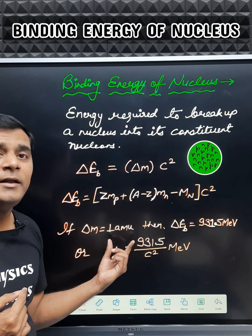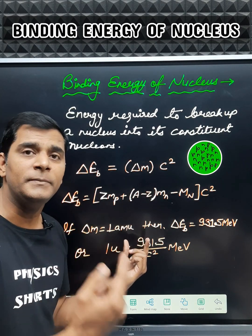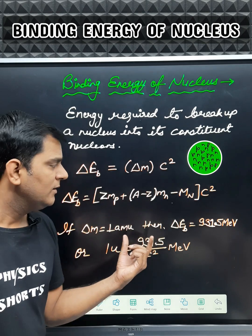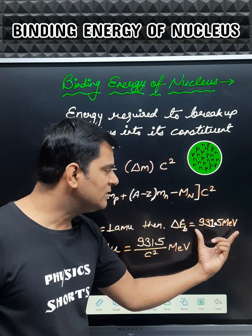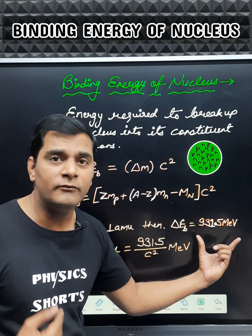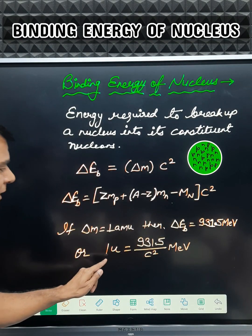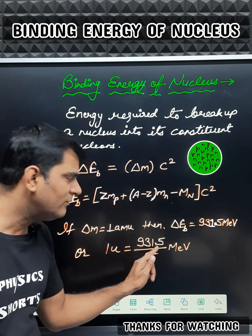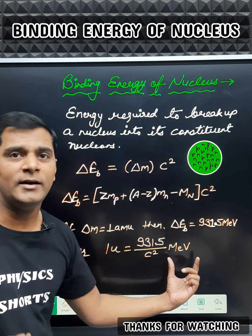Let us suppose if Δm is 1 amu, that is, one nucleon is completely converted into energy, then we get this ΔEb which is 931.5 MeV. And using this we can write 1u as equals to 931.5 upon c squared MeV.